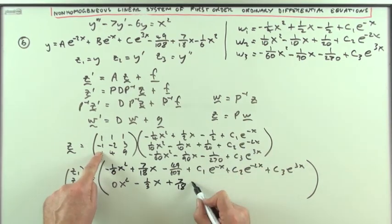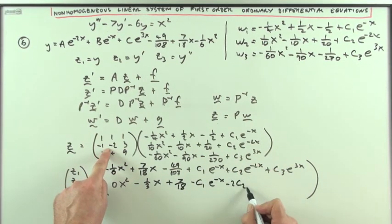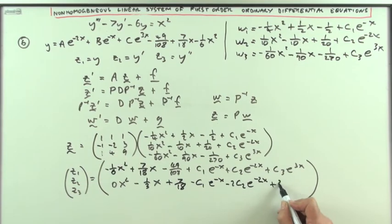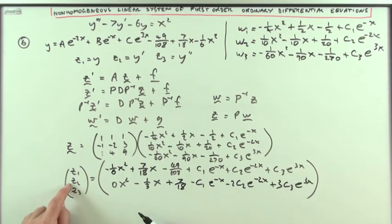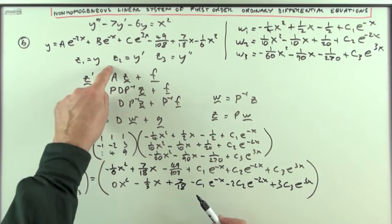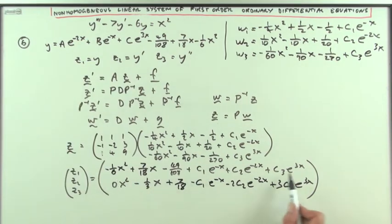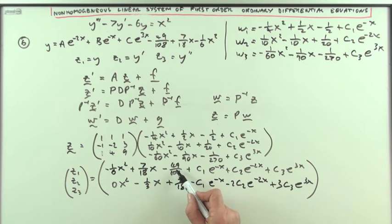And then I'll have negative c₁e⁻ˣ minus 2c₂e⁻²ˣ and then plus 3c₃e³ˣ. Now if that's the solution to z₂, z₂ should have been y dash, so that means the derivative of that line should be that line, and it is. That should disappear, so I'm left with seven eighteenths and negative a third x.